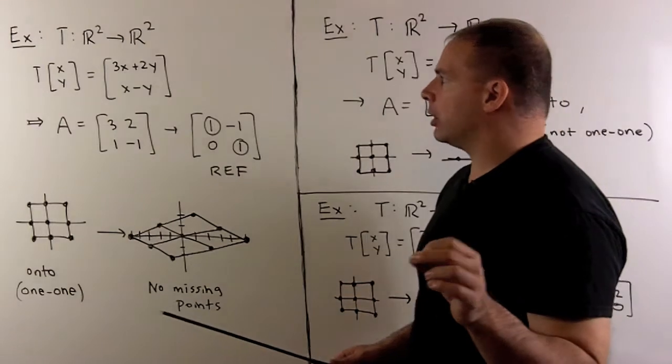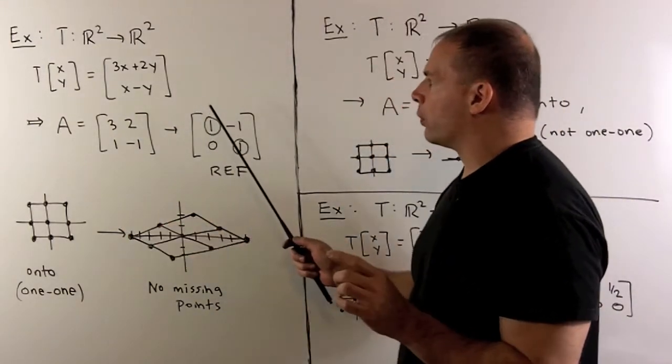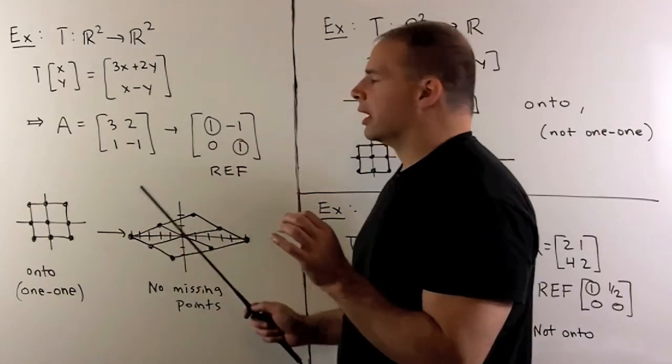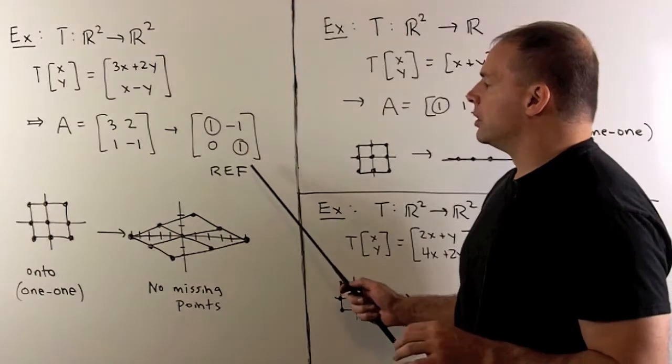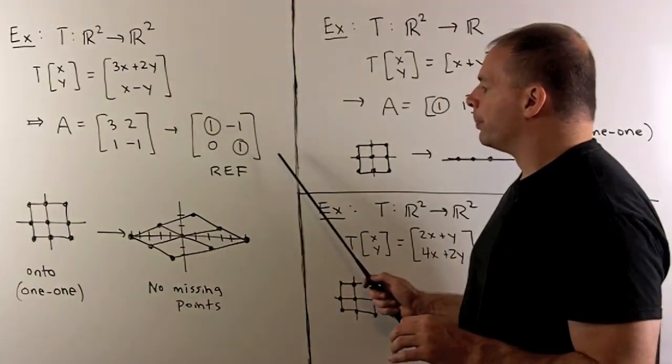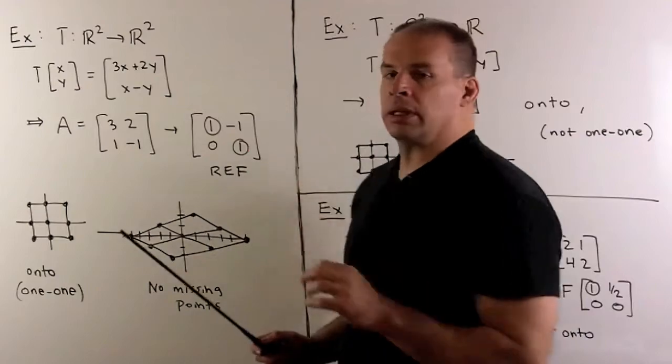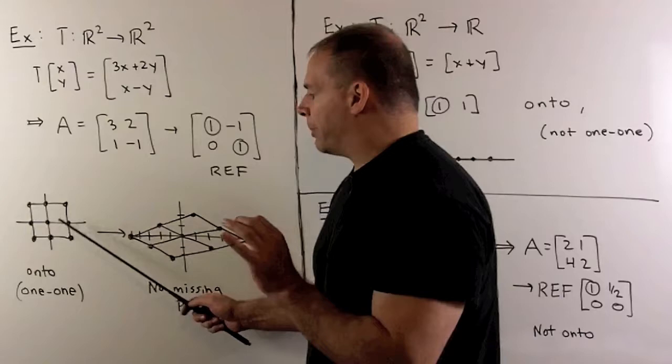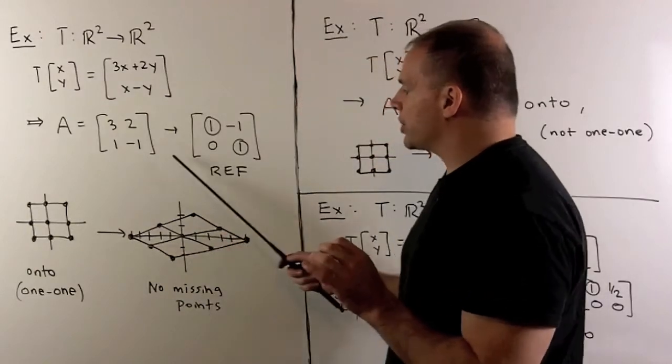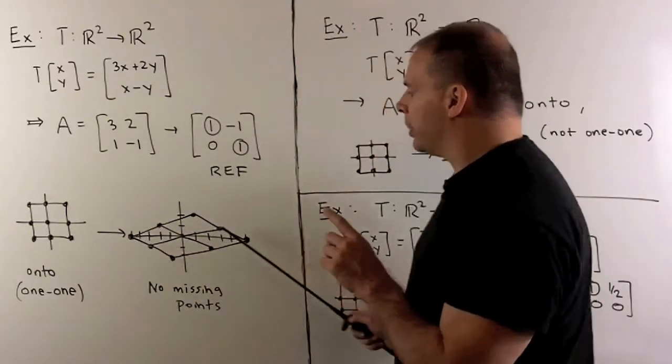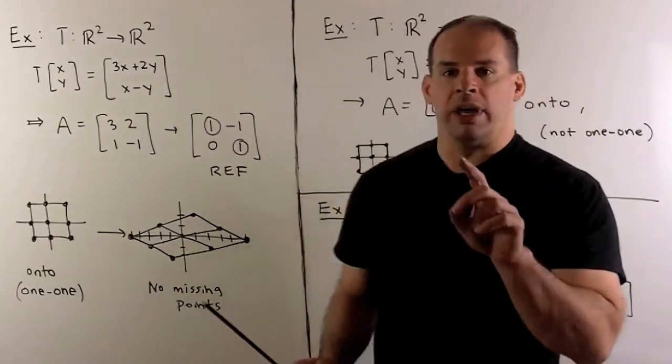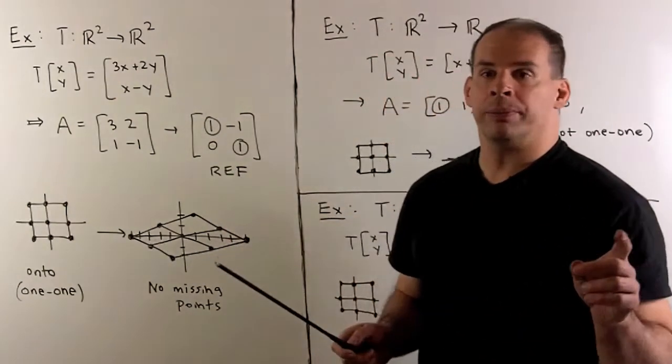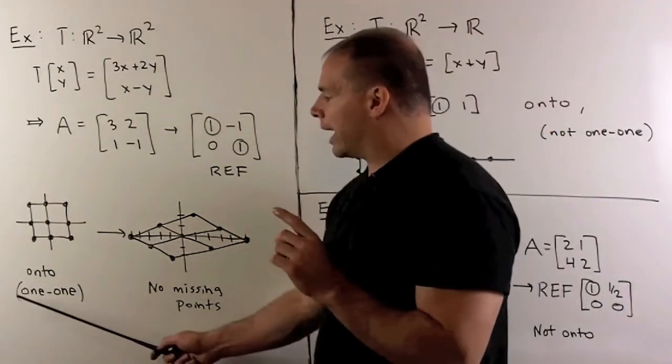For a concrete example, consider the linear transformation from before, from R2 to R2. We find the A matrix. Then we go to row echelon form. So here I have a pivot in each row. So we're onto. If we draw the pictures, so we'll take this grid, map it over using our A matrix. We see here we're going to map the plane to the plane. We're going to hit every point in the R2 that's on the right-hand side. So onto. Note, we saw before we had one-to-one.